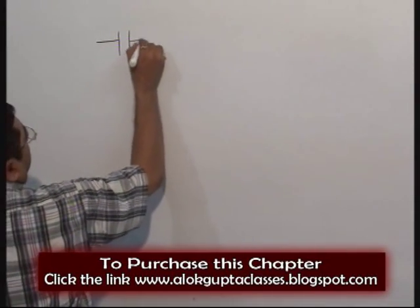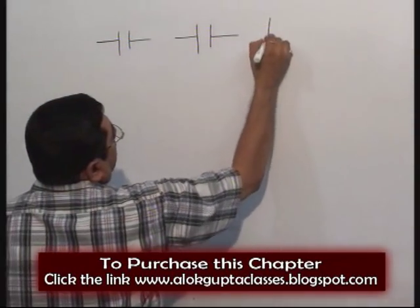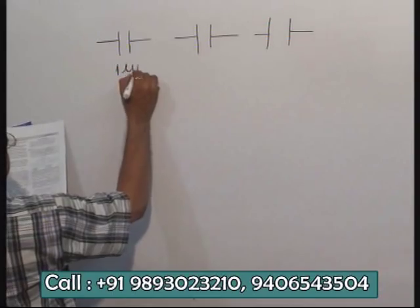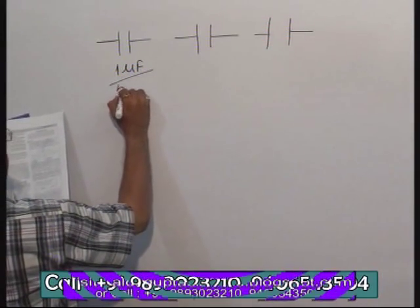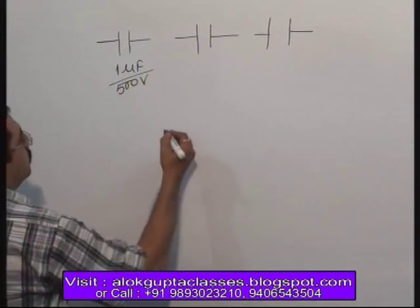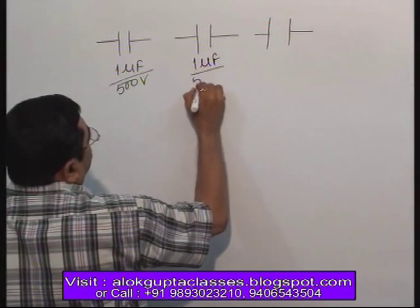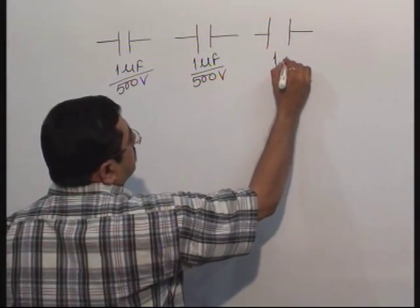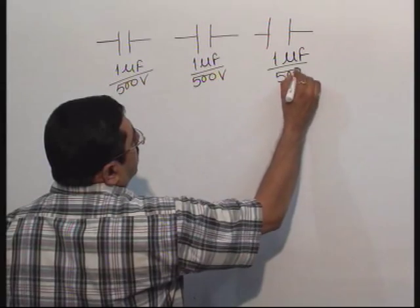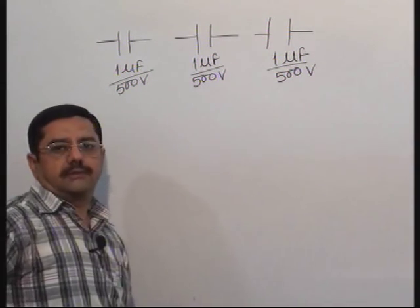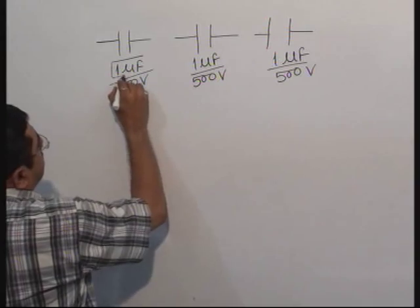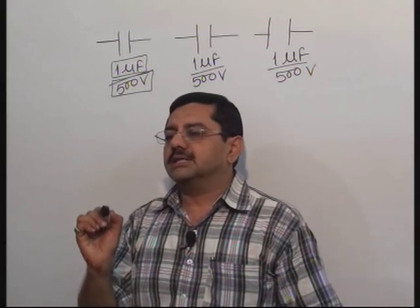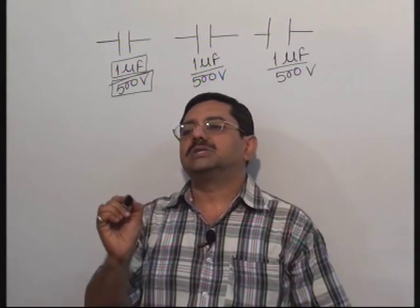Many capacitors are given — so many capacitors of the same rating, all identical. Each one is of 1 microfarad and can bear a potential difference up to 500 volt. This is the capacitance and this is the rated voltage. Rated voltage means the maximum potential that you can apply safely.